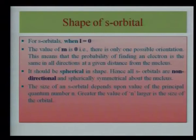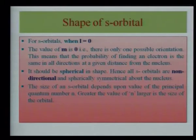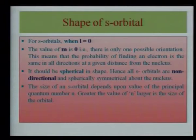For the S orbital, the value of l is 0 and m will be 0. So the shape will be spherical because it has the same orientation in all directions. All S orbitals are non-directional and spherically symmetrical about the nucleus.